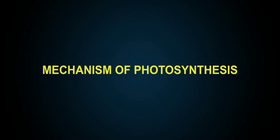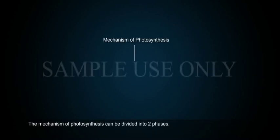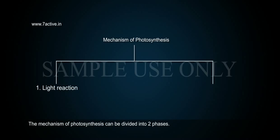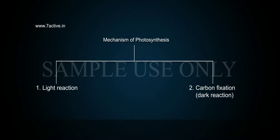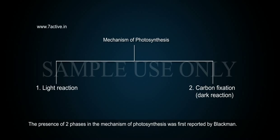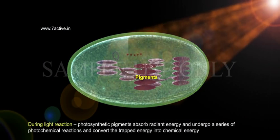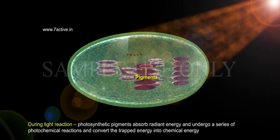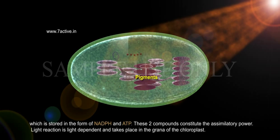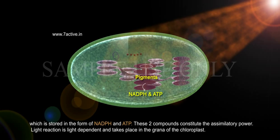The presence of two phases in the Mechanism of Photosynthesis was first reported by Blackman. During light reaction, photosynthetic pigments absorb radiant energy and undergo a series of photochemical reactions, converting the trapped energy into chemical energy, which is stored in the form of NADPH and ATP. These two compounds constitute assimilatory power. Light reaction is light-dependent and takes place in the grana of the chloroplast.